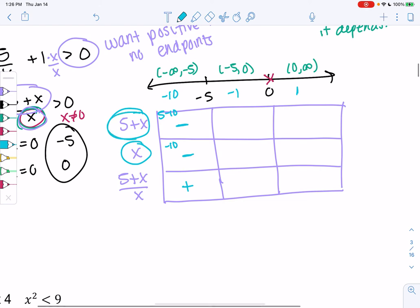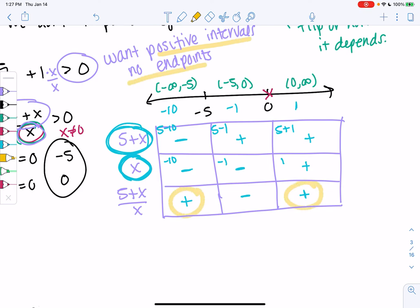For negative 1, we get 5 minus 1, which is positive. It's positive 4, but I just care that it's positive. Negative 1 would be negative, so this interval is negative. Our final interval, we get 5 plus 1, positive, and 1 is positive, so this final interval is positive. You can use your calculator, but we want to be efficient. We decided we want the positive intervals and no endpoints. So I'm going to pick the first and last one. No endpoints means open circles. We'll shade from negative infinity to negative 5, and from 0 to infinity with open circles. I can write the solution as negative infinity to negative 5, union 0 to infinity.